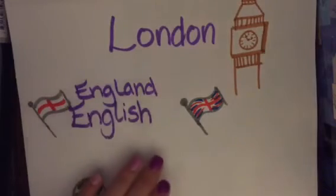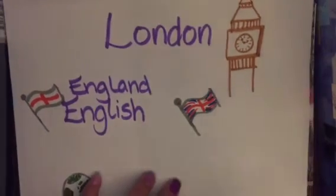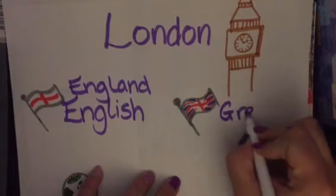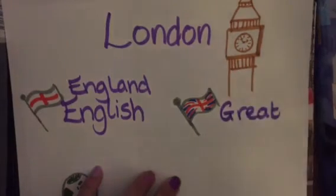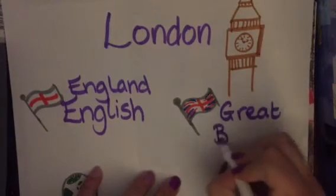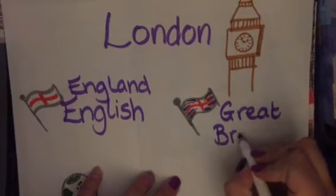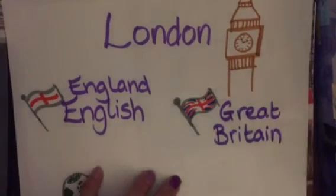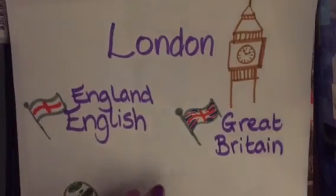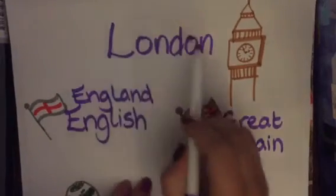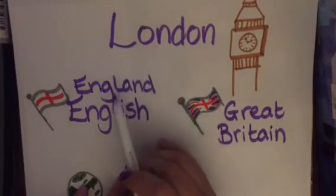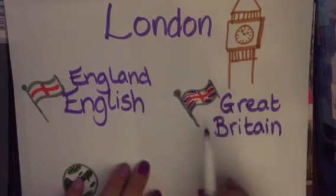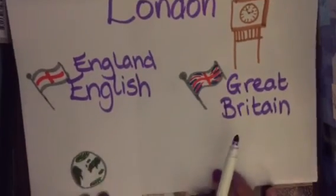England is part of a group of countries that makes up Great Britain — a bit like Texas is a state in the United States. So the city is capitalized, the country and its language are capitalized, and groups of countries are capitalized.